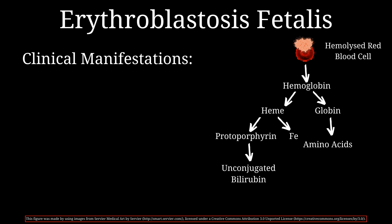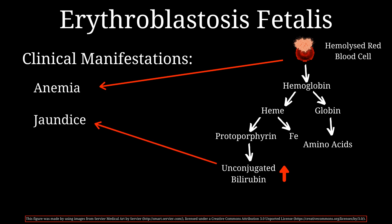In erythroblastosis fetalis, since a lot of antibodies are hemolyzing the red blood cells, it can lead to anemia because red blood cells carry oxygen to the tissues — destroying them reduces the total amount of oxygen being delivered. Furthermore, hemolysis increases the amount of hemoglobin being recycled, which indirectly increases unconjugated bilirubin levels. High unconjugated bilirubin levels are toxic and can lead to jaundice, visualized by yellowish discoloration of the skin and eyes of the baby once delivered.